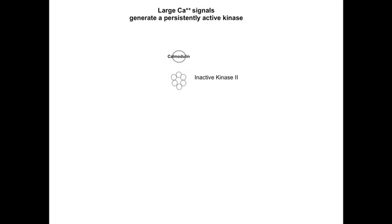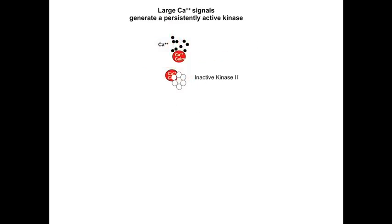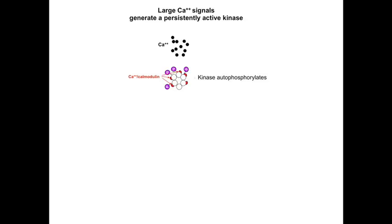Now let's see how a large influx of calcium affects CAM kinase 2. The large influx of calcium activates many molecules of calmodulin, and the large amount of calcium-activated calmodulin, in turn, strongly activates CAM kinase 2. And now comes the key point: the strong activation of CAM kinase 2 causes the molecule to phosphorylate itself, a process called autophosphorylation.